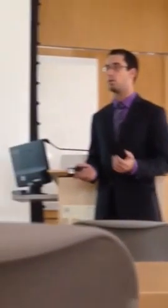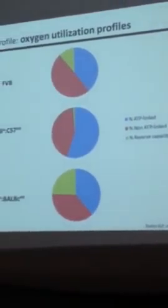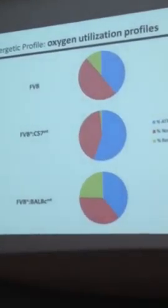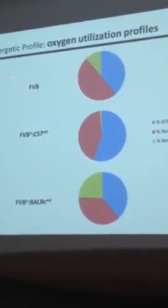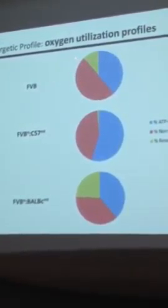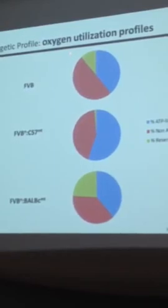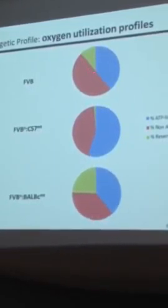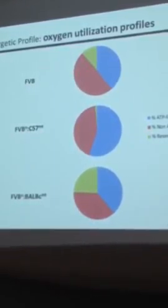Here it is in an easy-to-digest form. The full pie chart — the full 100% — refers to the total potential oxygen consumed during that assay. And we see that the reserve capacity in the FVB wild type...